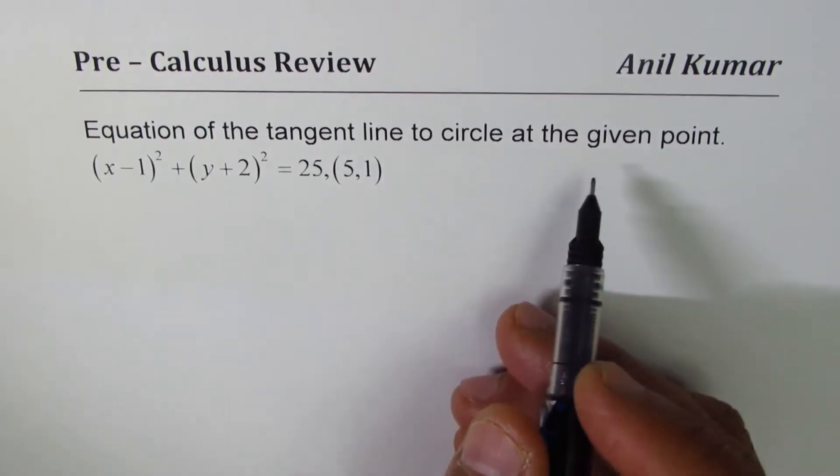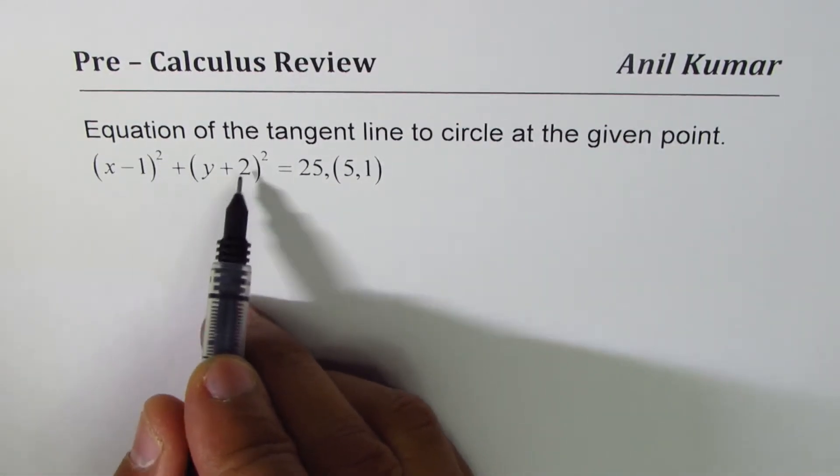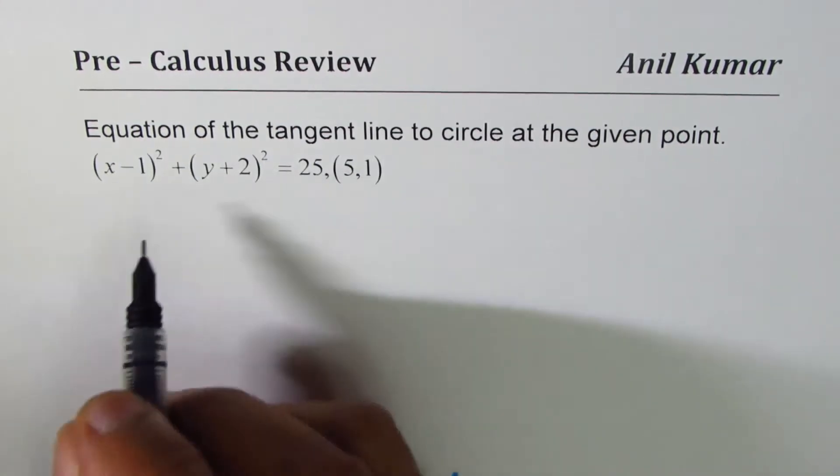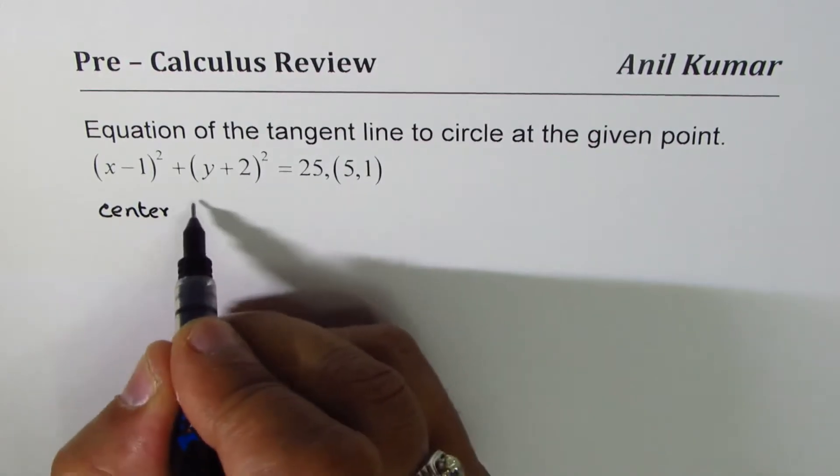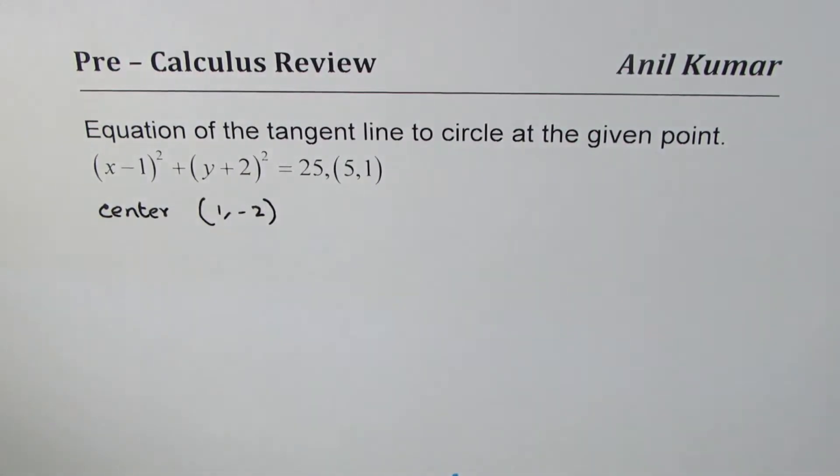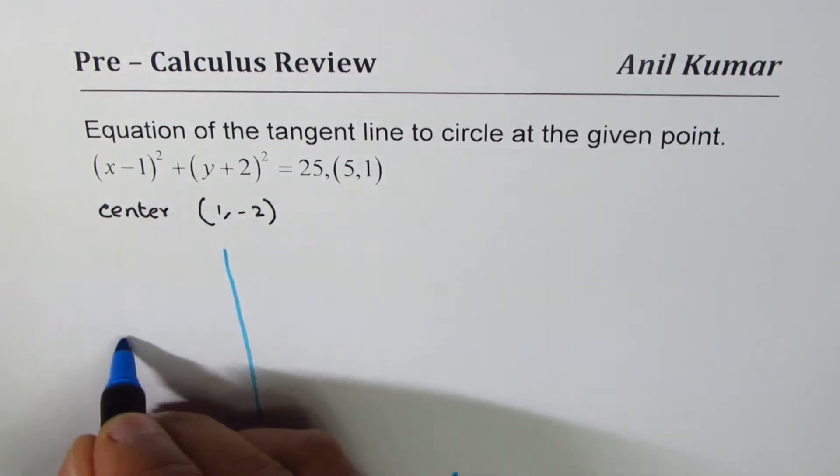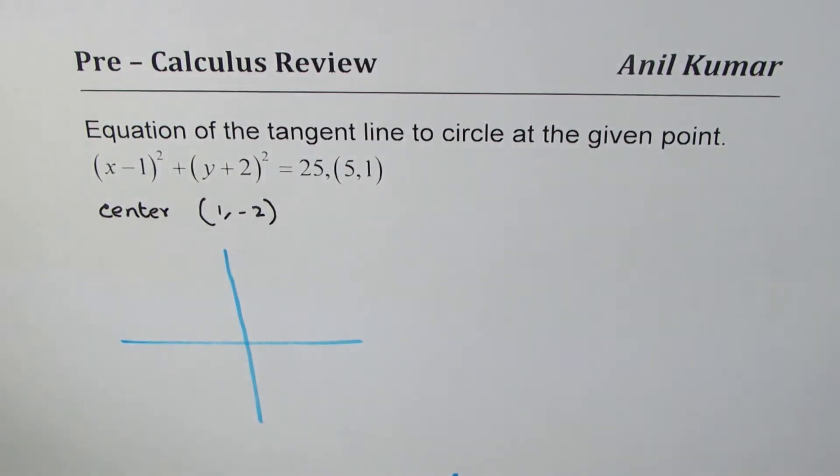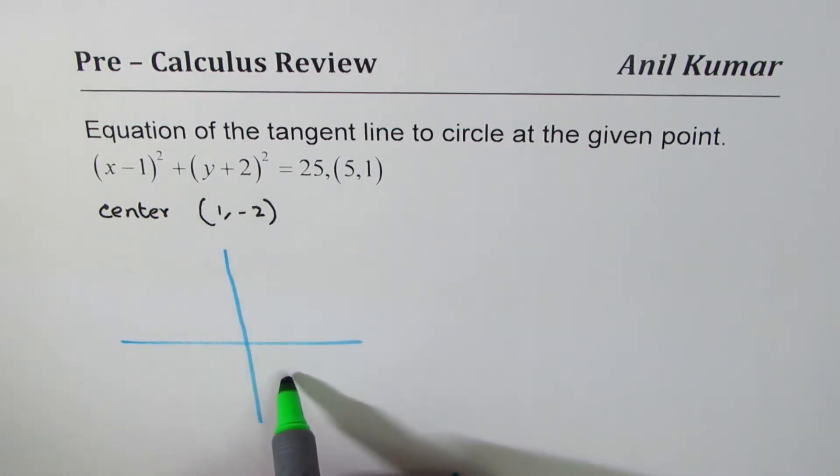The equation of the circle is given to us as (x - 1)² + (y + 2)² = 25. This means that the center of the circle is at (1, -2). So you can think about the circle like this. Let me just sketch one here. The center has been translated to (1, -2) somewhere there.